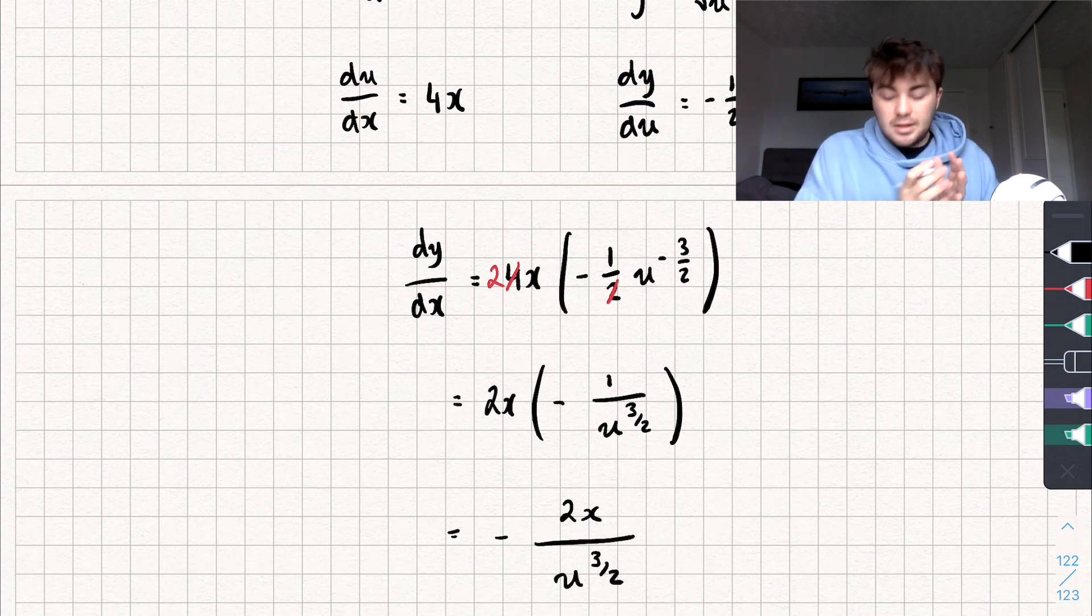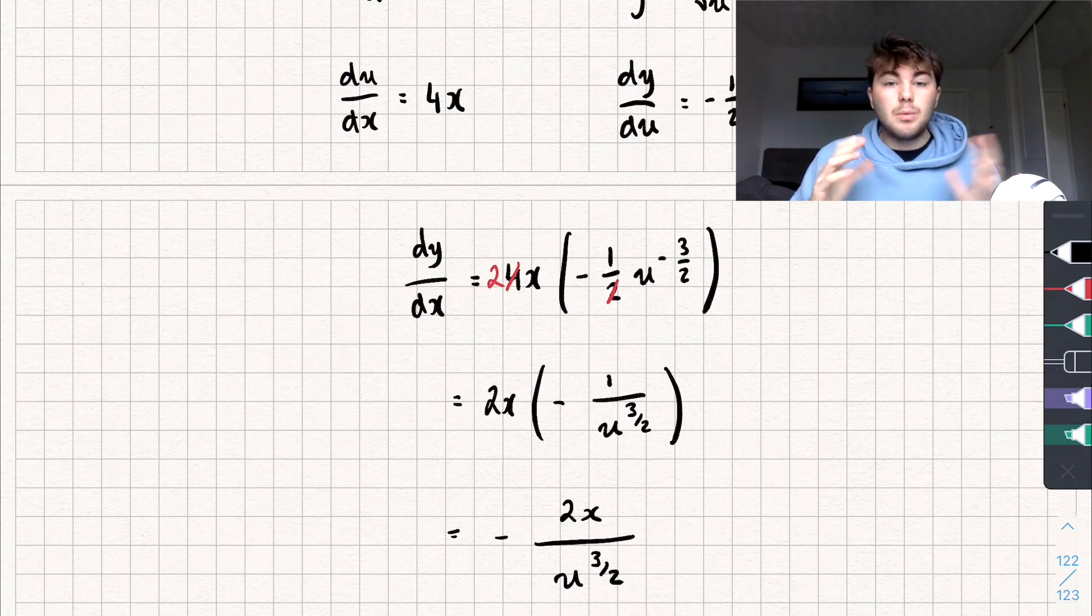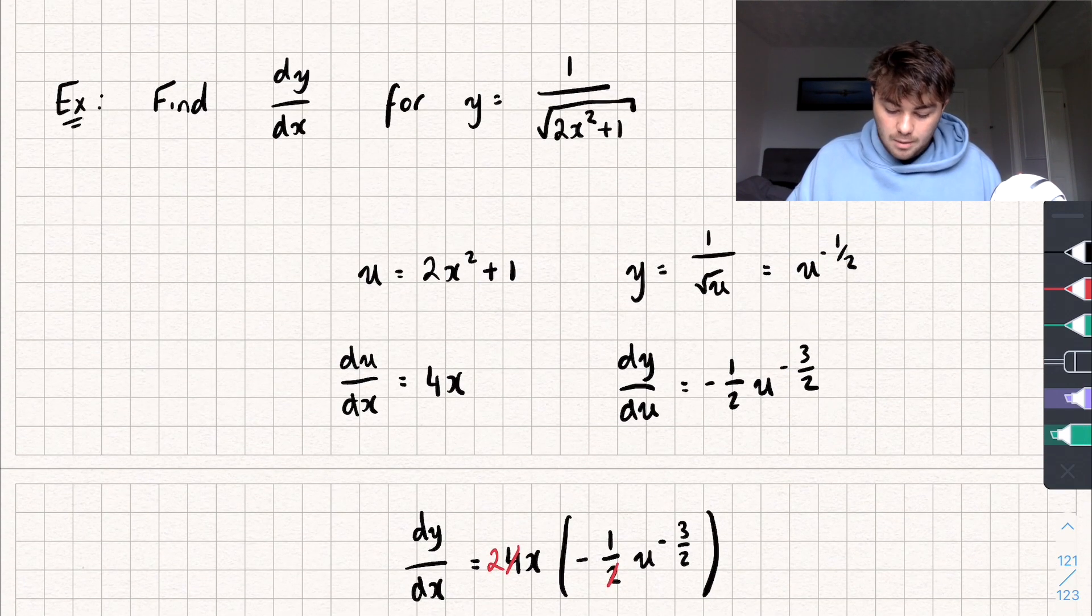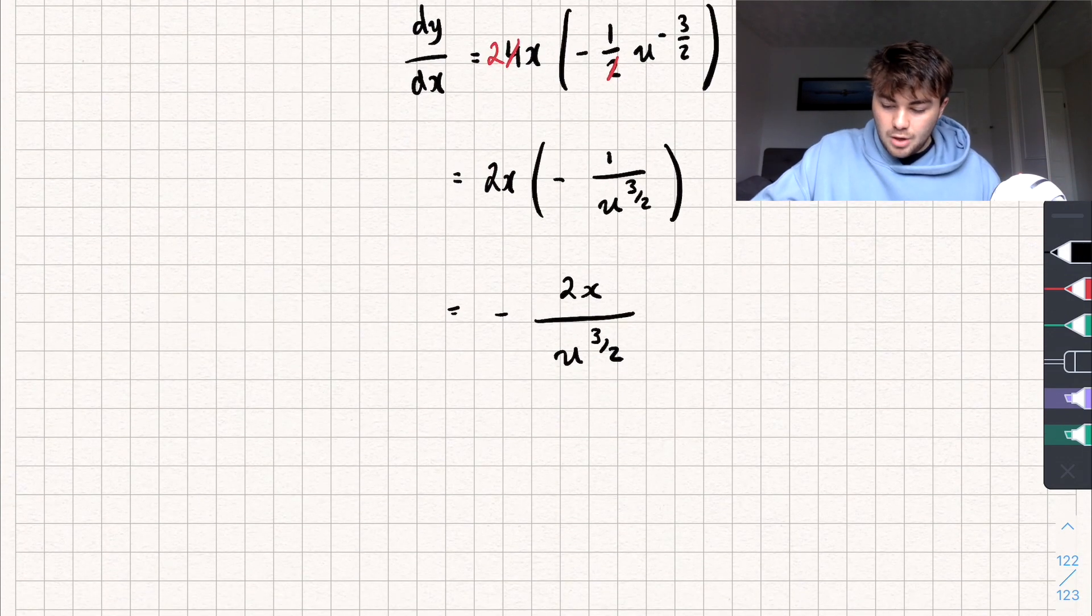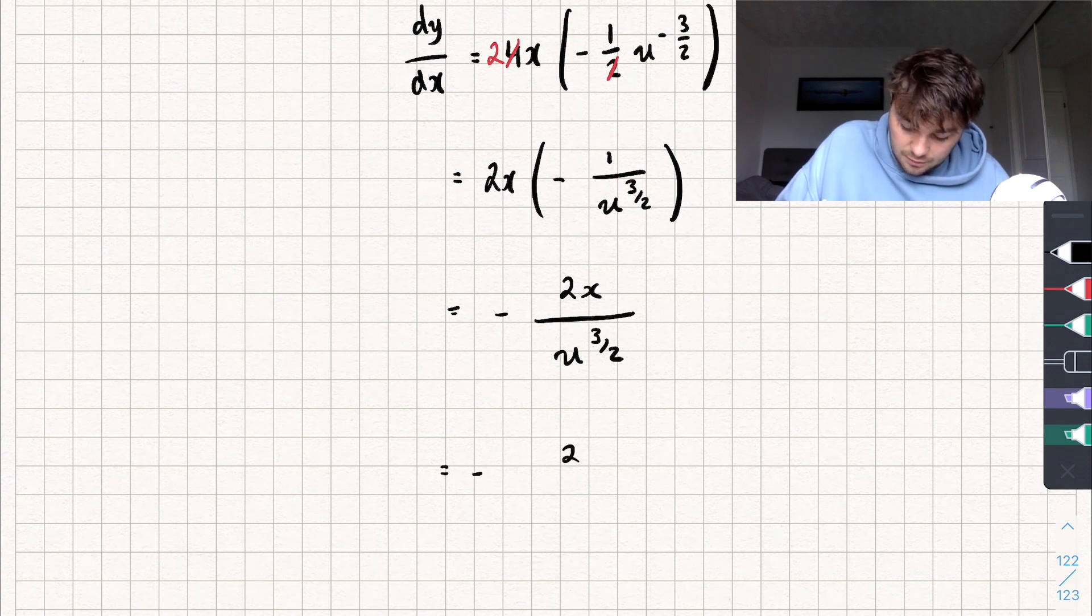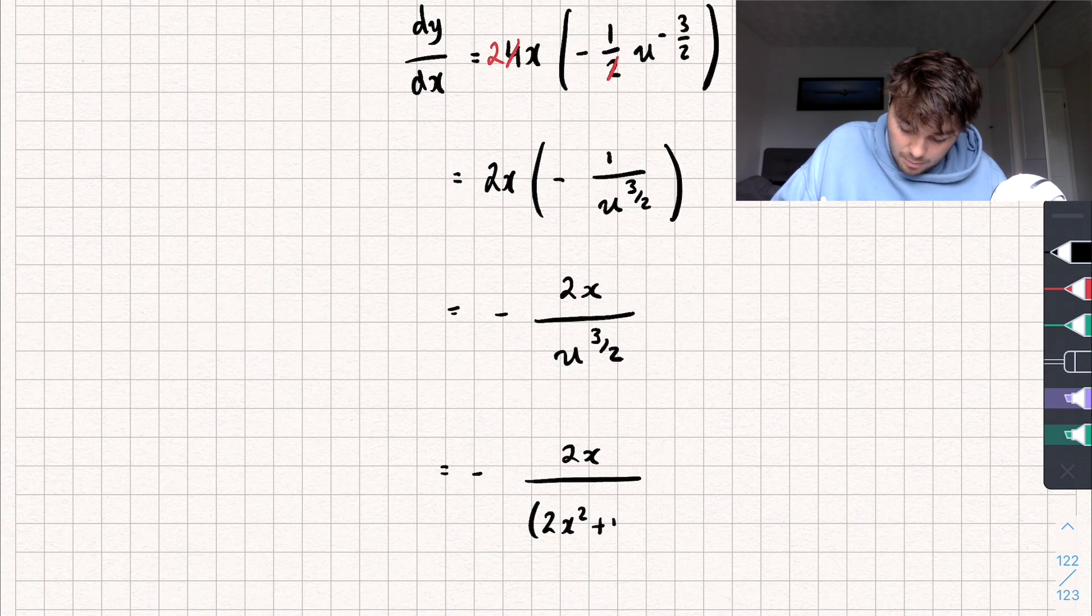But we've got our derivative in terms of x and u, but we want it just in terms of x. And the way we can sort that out is, well, if we look up here, we wrote that u is equal to 2x squared plus 1. So, I'm just going to substitute that back in. So, we're going to get that this is equal to negative 2x over 2x squared plus 1 to the power of 3 over 2. And this would be our derivative, dy by dx.